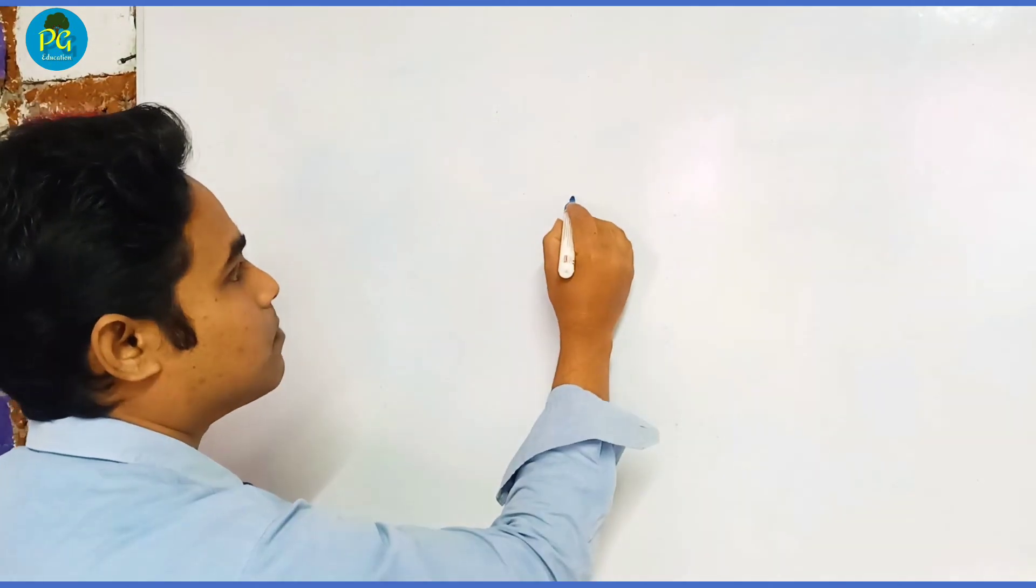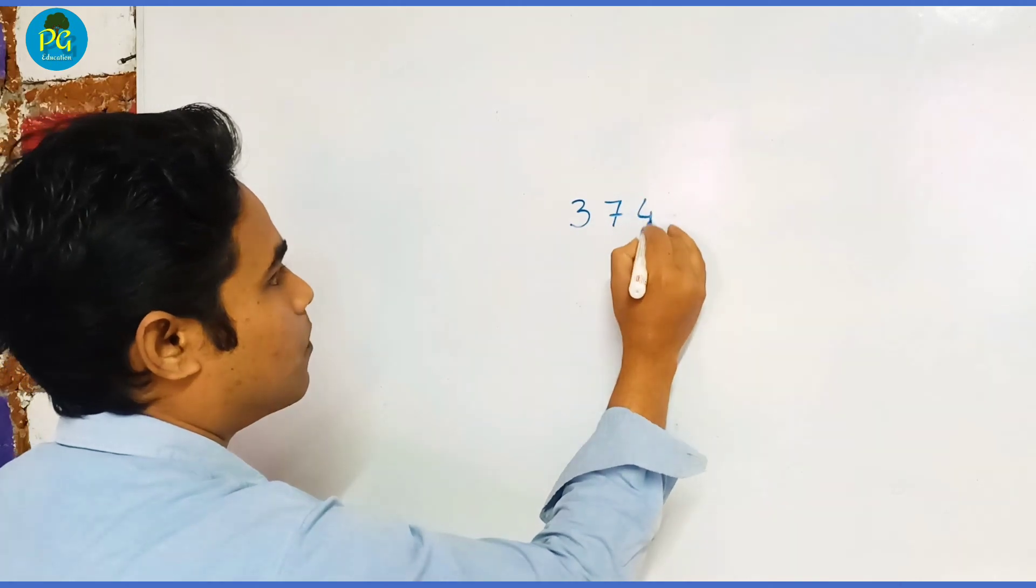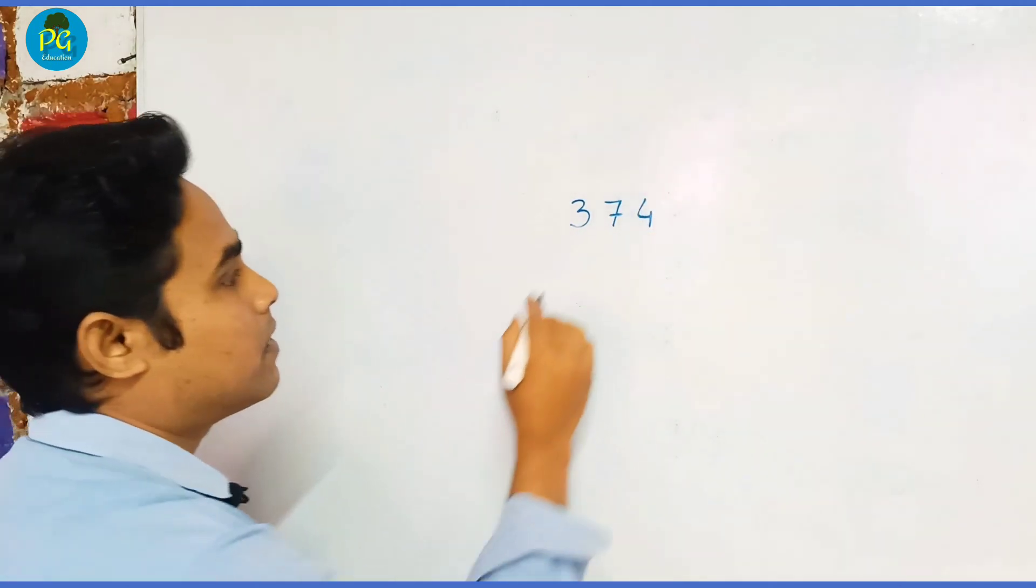Hi, welcome to our next video. In this video we will understand how to multiply any three-digit number by any two-digit number in a single line. Let us understand the process. Let's first take any three-digit number, suppose it is 374, and we want to multiply by 54.